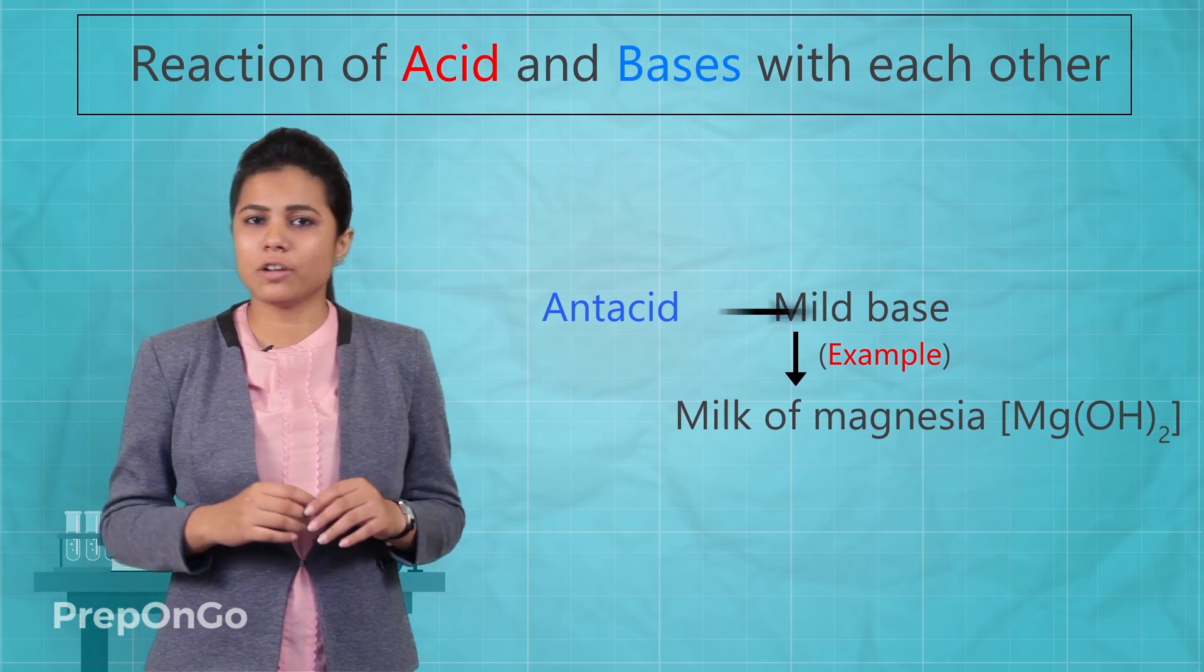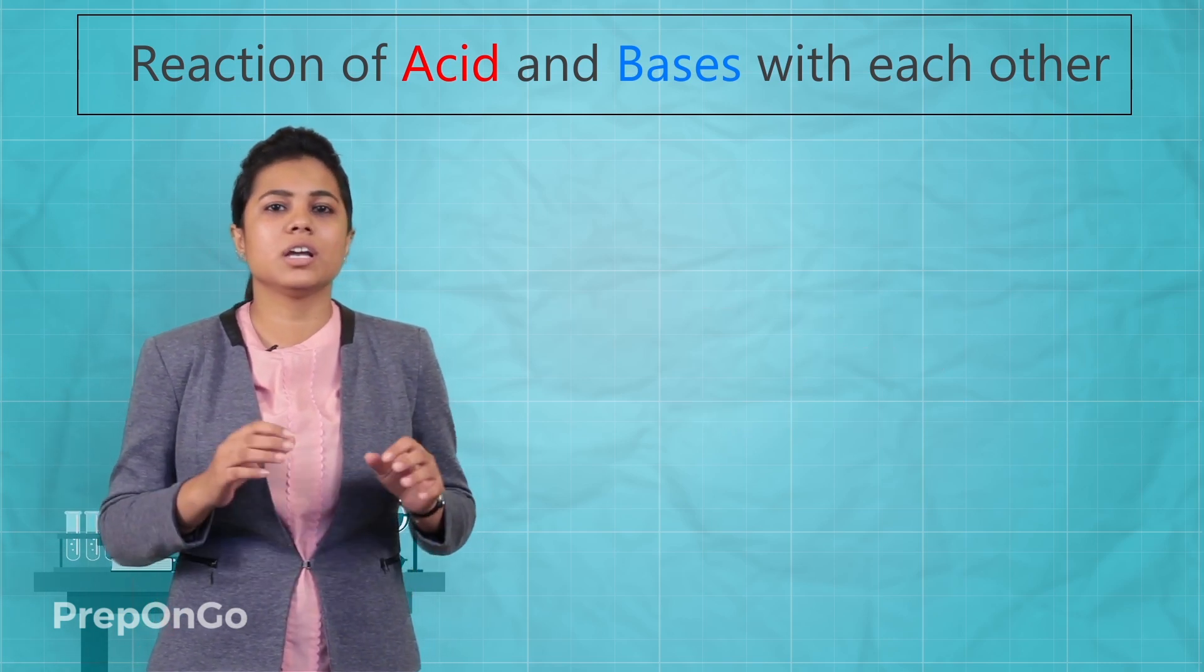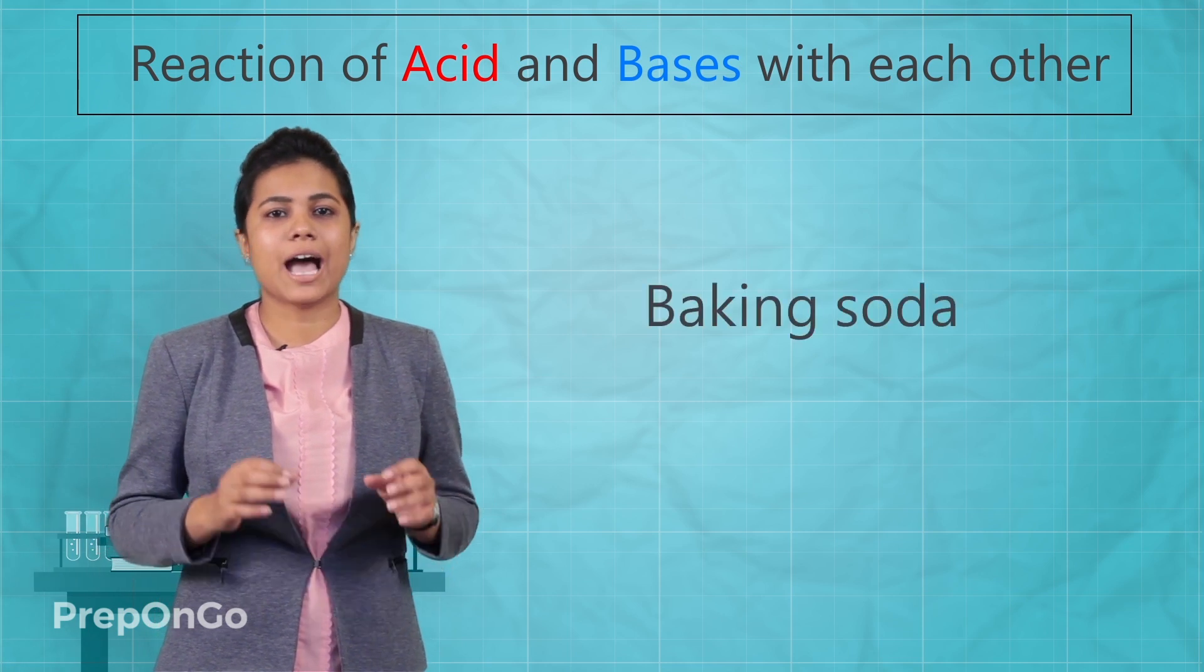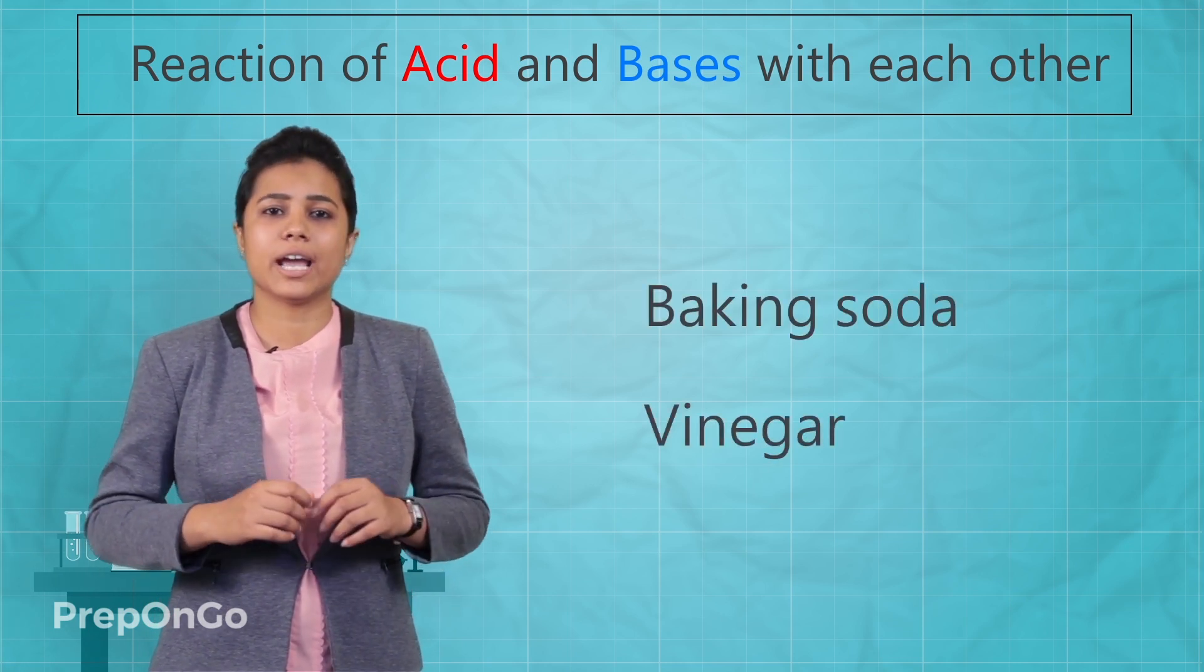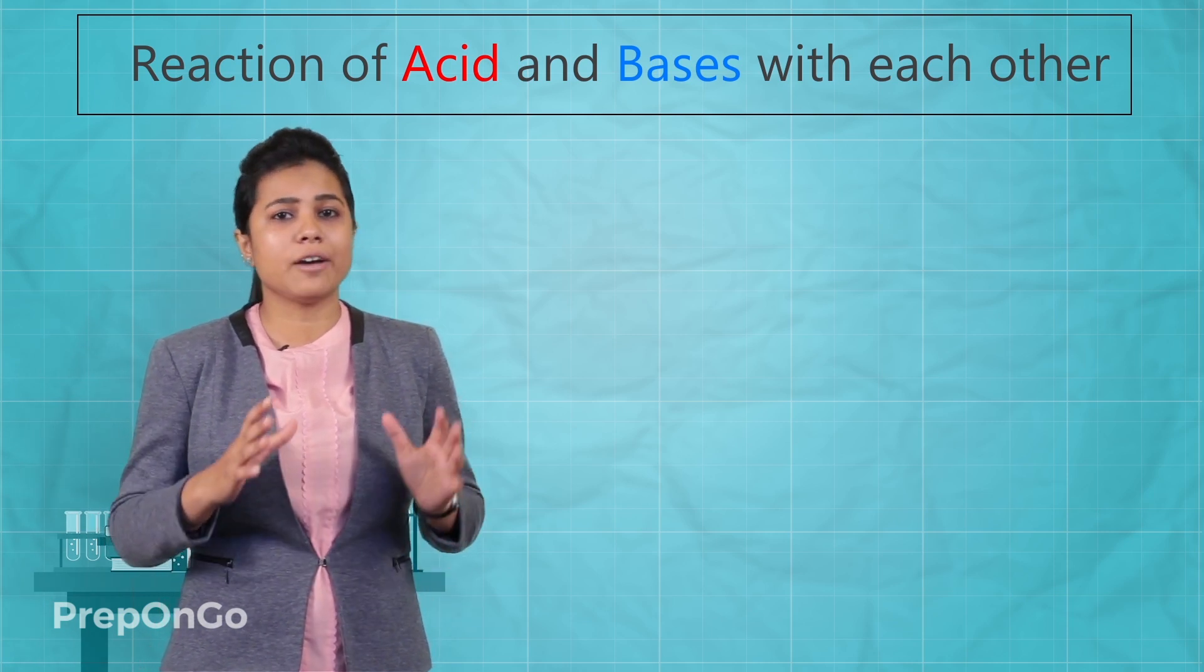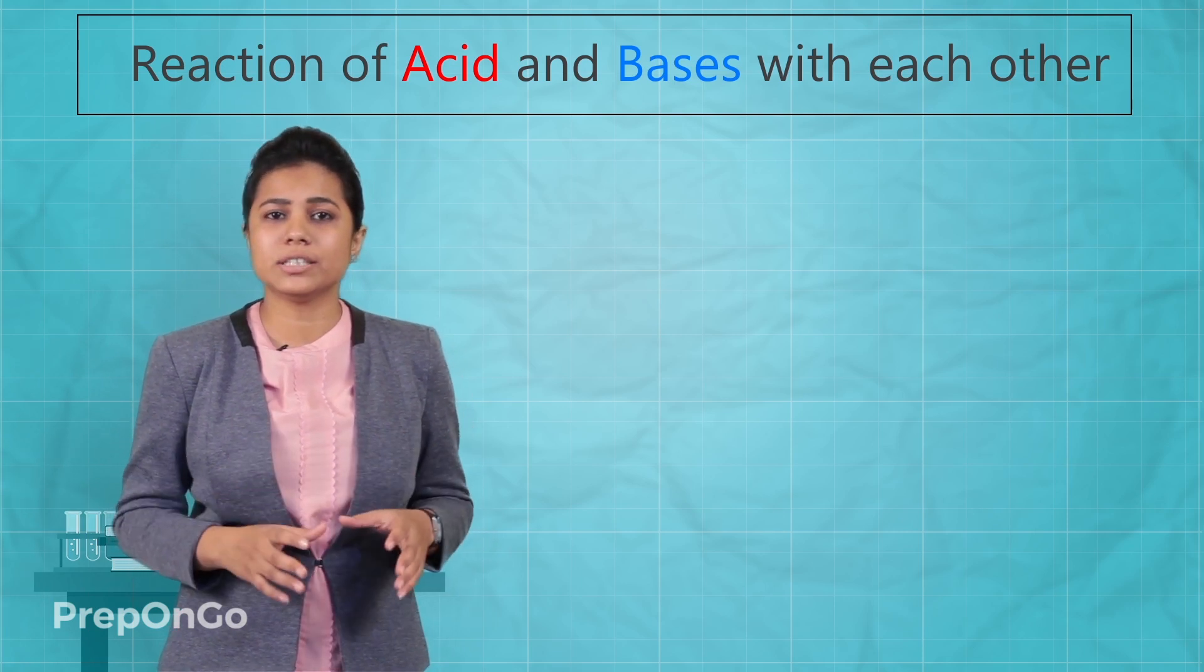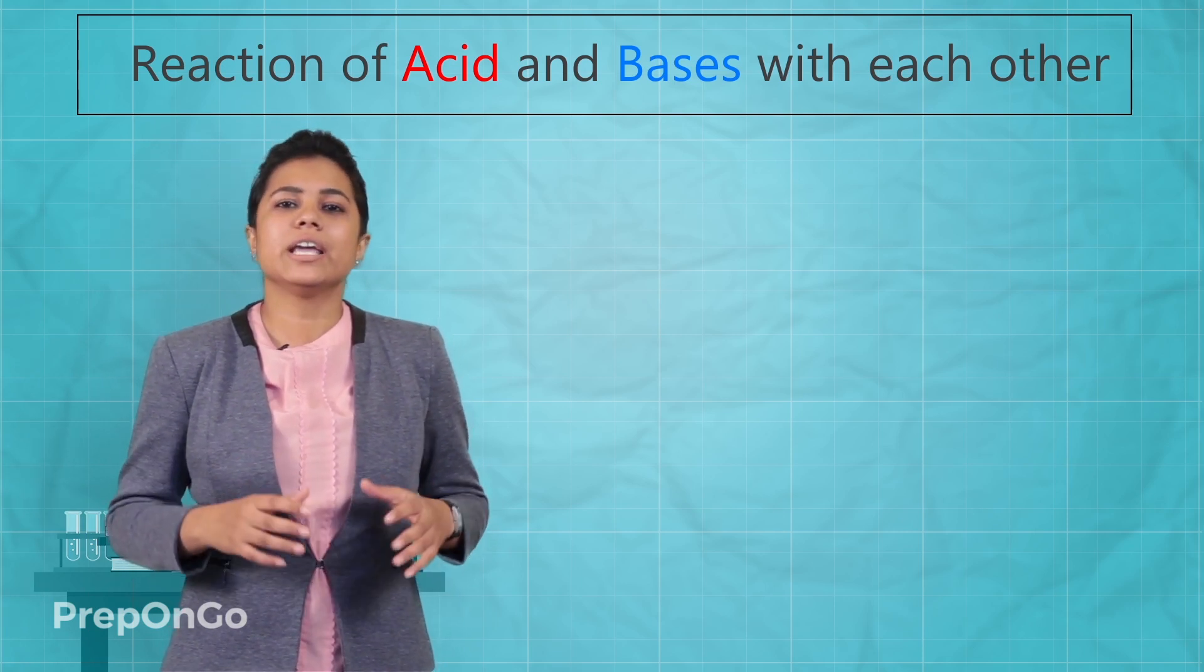So the markets are full of these antacids. There are also some natural remedies such as baking soda and vinegar which can cure acidity. So you see in our day-to-day life also we have a use of acids and bases reaction. We are going to see similar kinds of reactions in our next video.